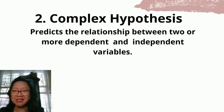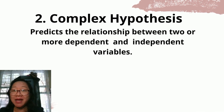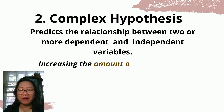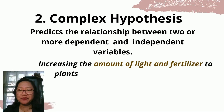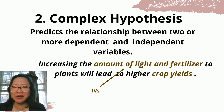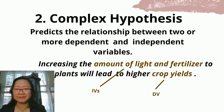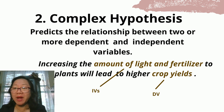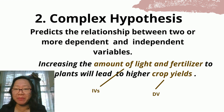The second type is complex hypothesis. It predicts the relationship between two or more dependent and independent variables. Example: increasing the amount of light and fertilizer to plants will lead to higher crop yields. Here we have two independent variables — amount of light and fertilizer — and one dependent variable, crop yield. Hence, this is a complex hypothesis.